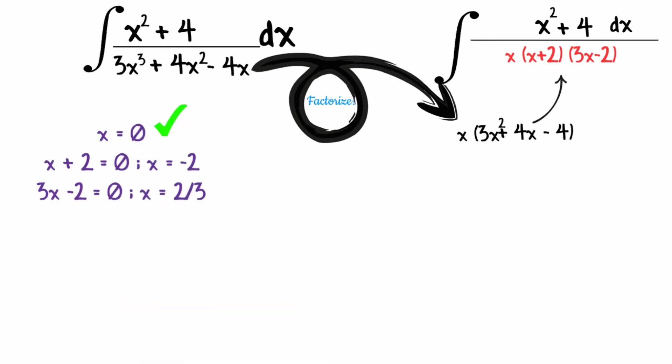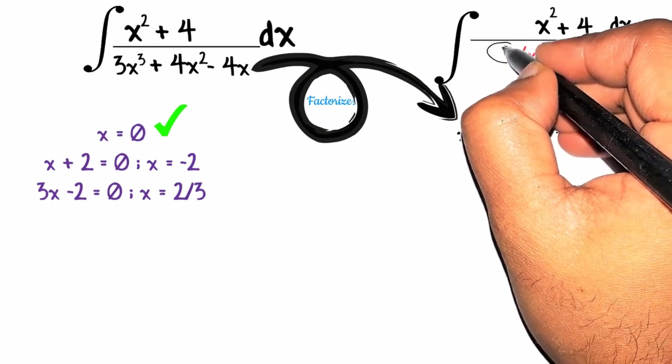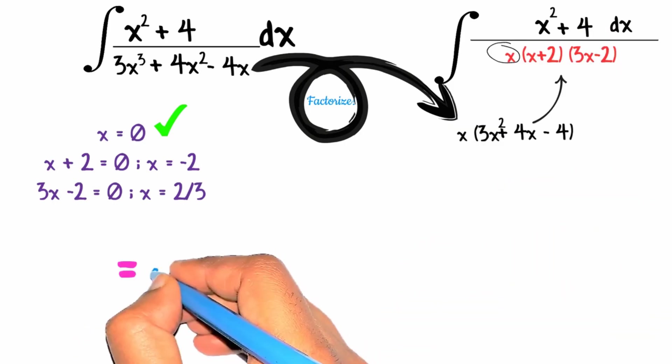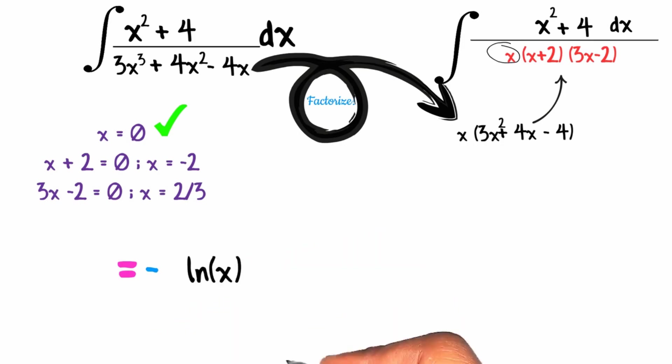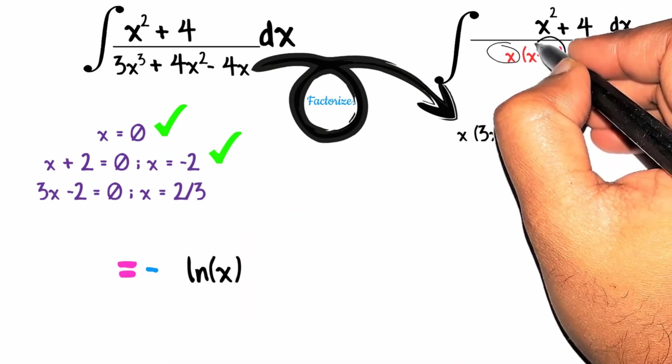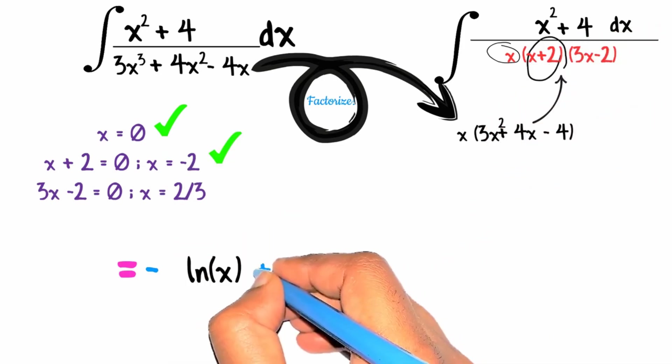Now we will apply the same method by putting x equals to 0 and putting it in the original question. So solving for x will give us our first coefficient which will be minus 1. Then we will write ln and then x. Similarly solving for x plus 2 will give us the coefficient 1 by 2. Then we will write ln and then x plus 2.